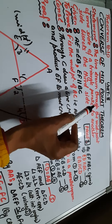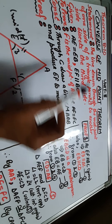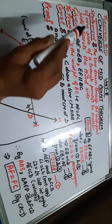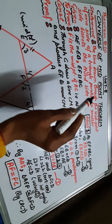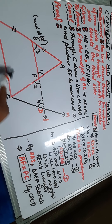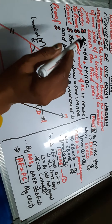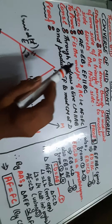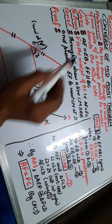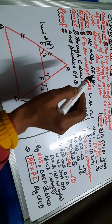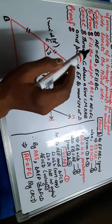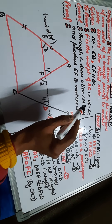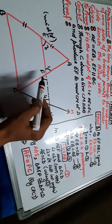Here is the statement: the line drawn through the midpoint of one side of a triangle, parallel to another side, bisects the third side — bisects means divides into equal parts. What is given to us: E is the midpoint, that means AE is equal to EB, and EF is parallel to BC. What we have to prove: F is the midpoint of AC, meaning F bisects AC, so we have to prove AF is equal to FC.